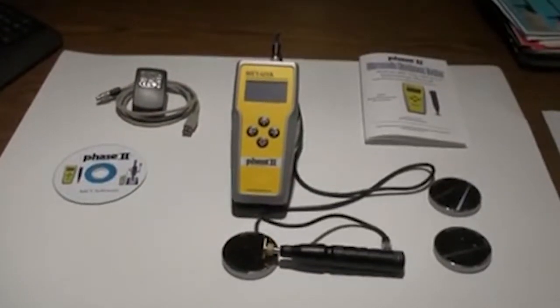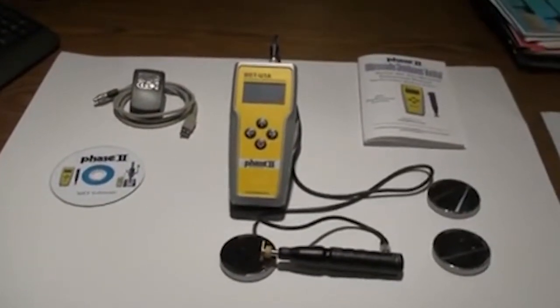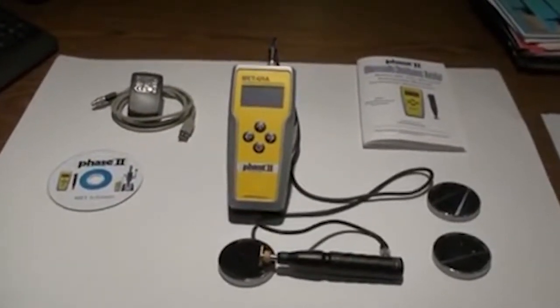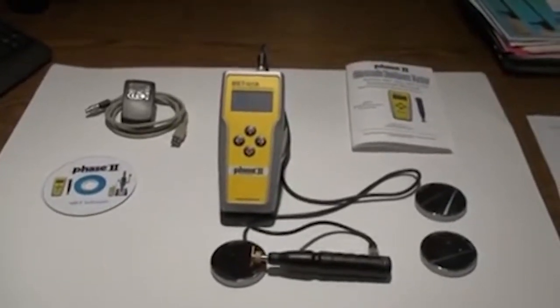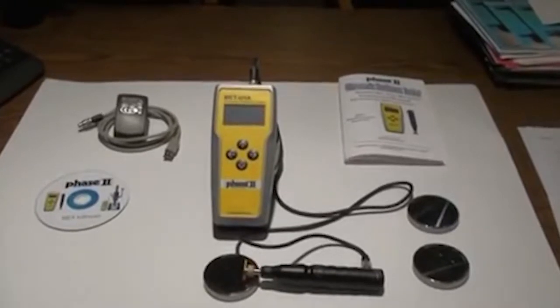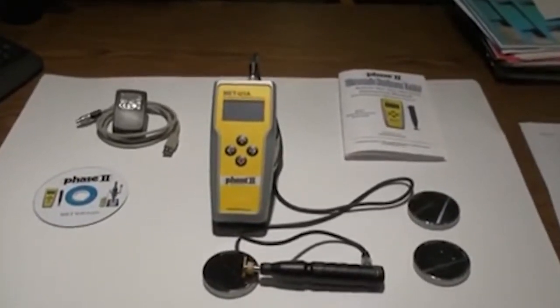Each MET series portable hardness tester comes with calibrated test blocks, USB output cable, USB program driver disk, USB charger, calibration certificate, operation manual, and carry case.